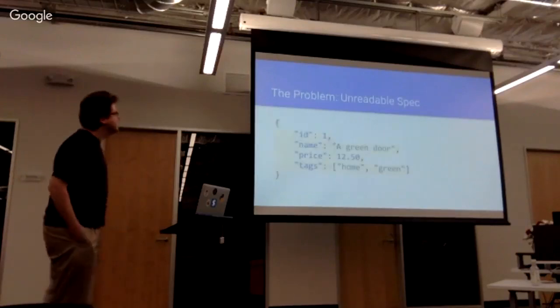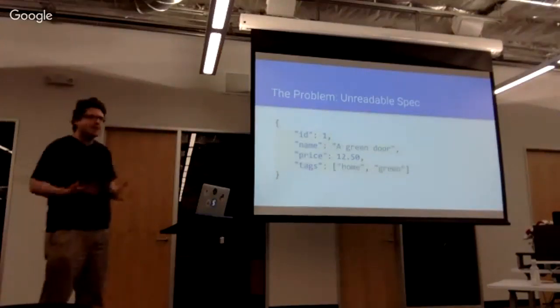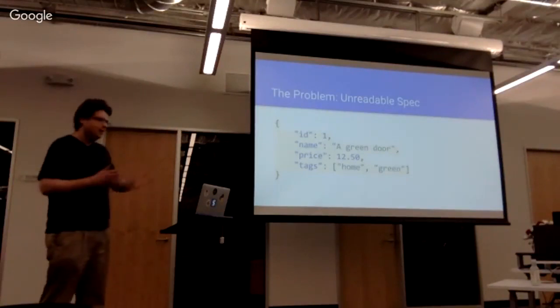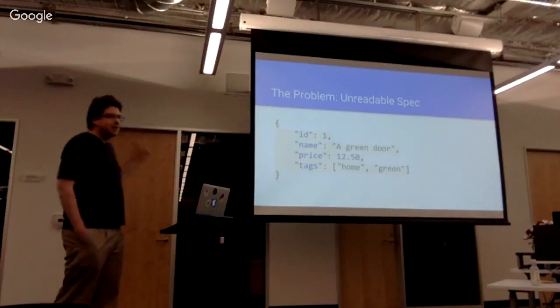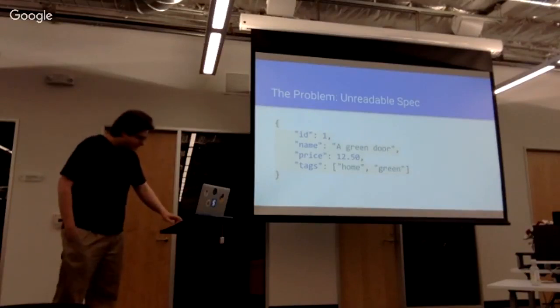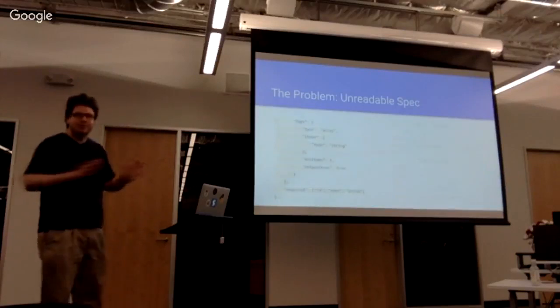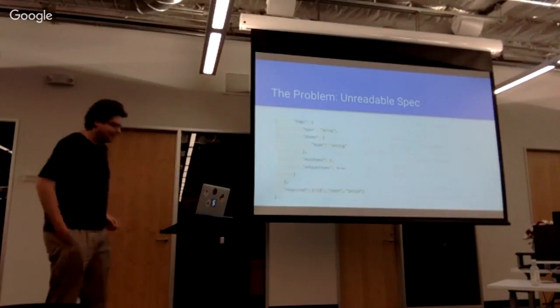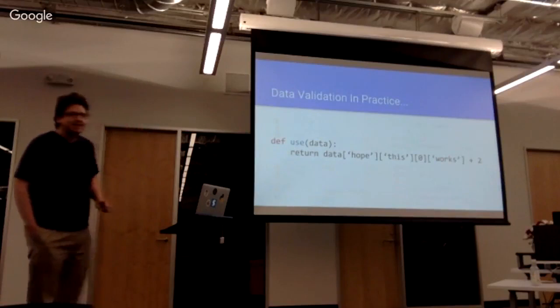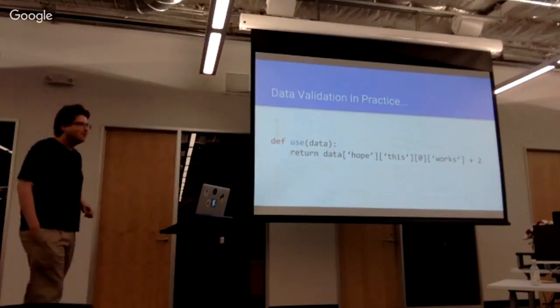So first, the current problem. Let's say we have a structured message, something like this, and you want to write a specification that will encapsulate this. You don't have to worry about your code dealing with bad inputs. The first thing that may come to mind is something like JSON schema. The problem with JSON schema is that you end up with something like this, and it only gets worse as the size of your messages get larger. So in practice, what actually happens is you actually do something like this, and maybe you feel a little bit guilty that you didn't validate your input. Then you kind of cross your fingers, hope for the best.